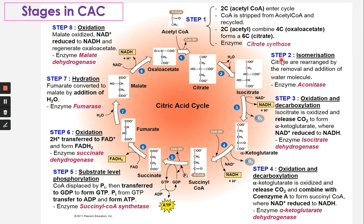Step 2 is isomerization: citrate undergoes rearrangement by removing and adding a water molecule to form an isomer known as isocitrate. This reaction is catalyzed by aconitase.